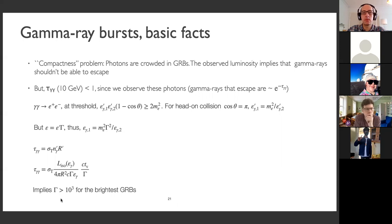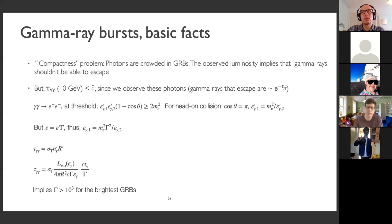We observe gamma rays from gamma ray bursts, which means the optical depth cannot be very large. If we have optical depth equal to one, the fraction of gamma rays escaping is e to the minus one — about 20%. So if we observe GeV gamma rays, the optical depth can be one or two, but not much more than that. Looking at the energetics of pair production — where the threshold energy is twice the mass of the electron — we convert observed energies to co-moving frame energies.